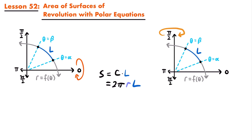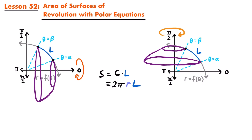We have two graphs: in the first, we are revolving around the polar axis (angle of 0), and in the second, we are revolving around the vertical axis (θ = π/2). When we revolve around the polar axis, we can take any point along this arc length and revolve it around the polar axis to create circular cross sections forming the surface of revolution. The area of the surface of revolution equals 2π times the radius times the arc length.